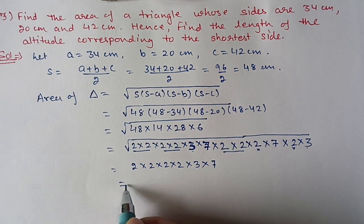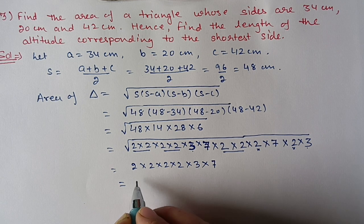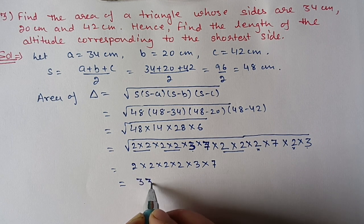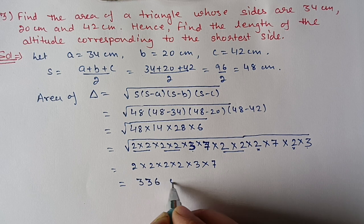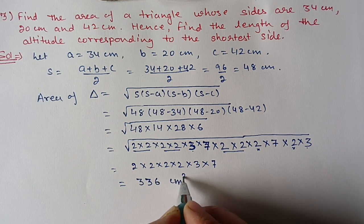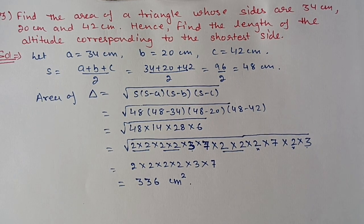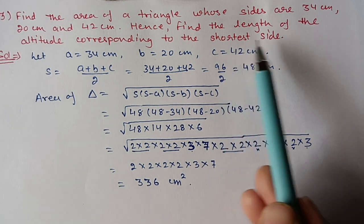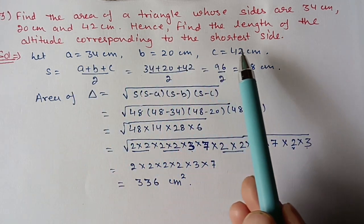After multiplication, we get 336 cm². So this is the first part. In the second part, they ask for the length of the altitude corresponding to the shortest side.